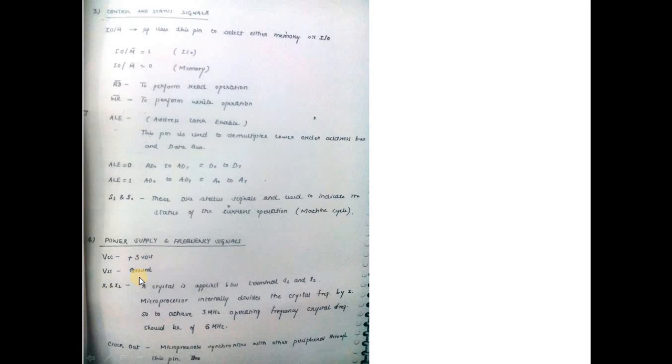Power supply: VCC is plus 5V, VSS is ground. X1 and X2: a crystal is applied between terminals X1 and X2. The most important point is that the microprocessor internally divides the crystal frequency by 2. So if we want 3 MHz operating frequency, the crystal should be 6 MHz.